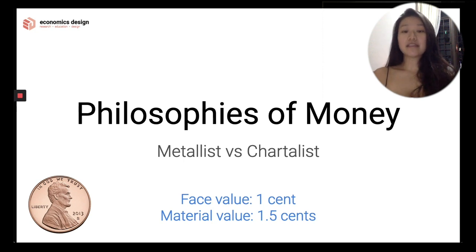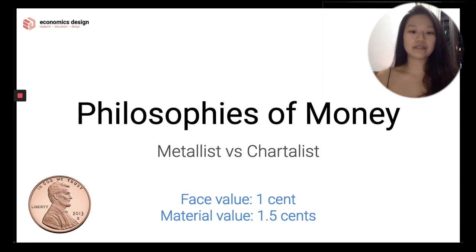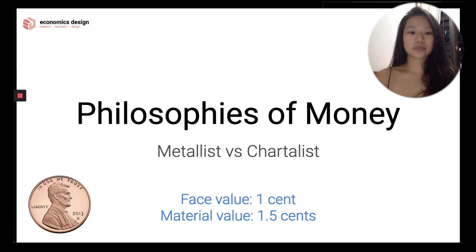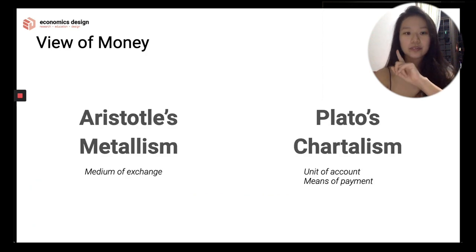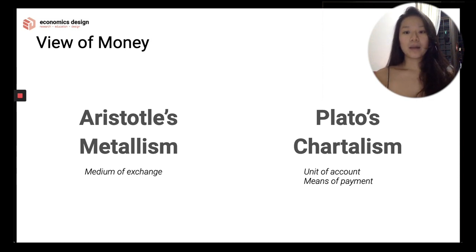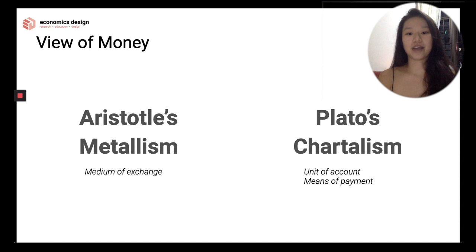That statement summarizes the differences in philosophical views. Metalist money is where the thing has value on its own — the value of the copper in the coin, which is 1.5 cents. Chartalist money is where the thing represents value, so the face value of the penny is 1 cent. In the metalist view, money is developed as a medium of exchange to eliminate barter trade barriers — the intrinsic value of the commodity gives money its value, like gold coins. In chartalism, money is issued by the state that guarantees the value, becoming a unit of account and means of payment to balance debt and credit among people.